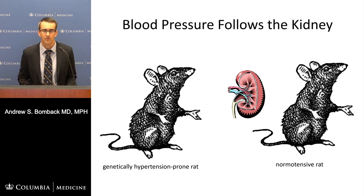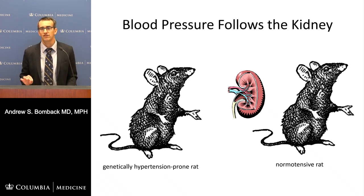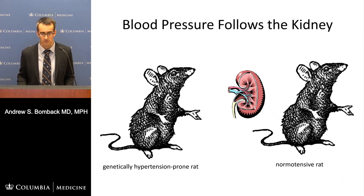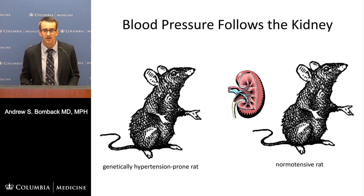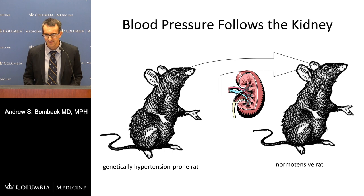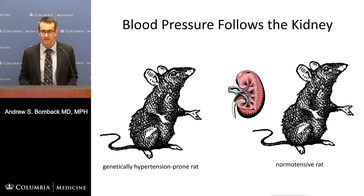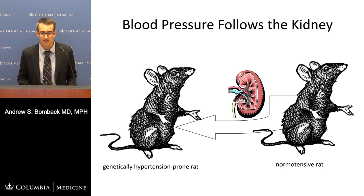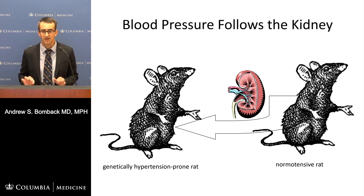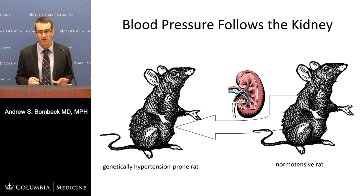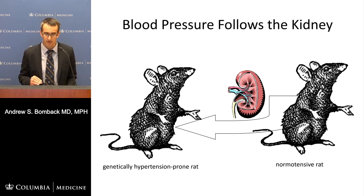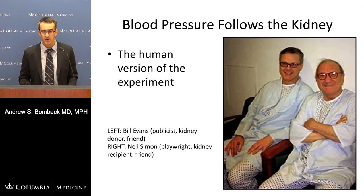Nephrologists often say blood pressure follows the kidney — specifically, the kidney's ability to handle salt loads. This has been shown beautifully in animals. If you take a genetically hypertension-prone rat and transplant its kidney into a normotensive rat, that rat becomes hypertensive. Conversely, transplanting a normotensive rat's kidney into a hypertensive rat makes it normotensive — not through any change in diet or medication, but solely because of the difference in the kidney's handling of salt. This is the purest demonstration of the kidney's role in maintaining blood pressure.